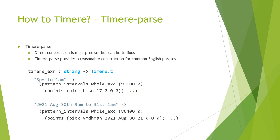We start off by introducing the individual API components. The first one, as we've seen in the example, is the Timore Pass component. It translates a string into a Timore object, which is the scheduling object. We have two examples, and we use the as expression serialization to represent the Timore object itself. We can see it's equivalent to the direct construction, but it's often quicker to just ask Timore Pass to construct simple things like these for you.